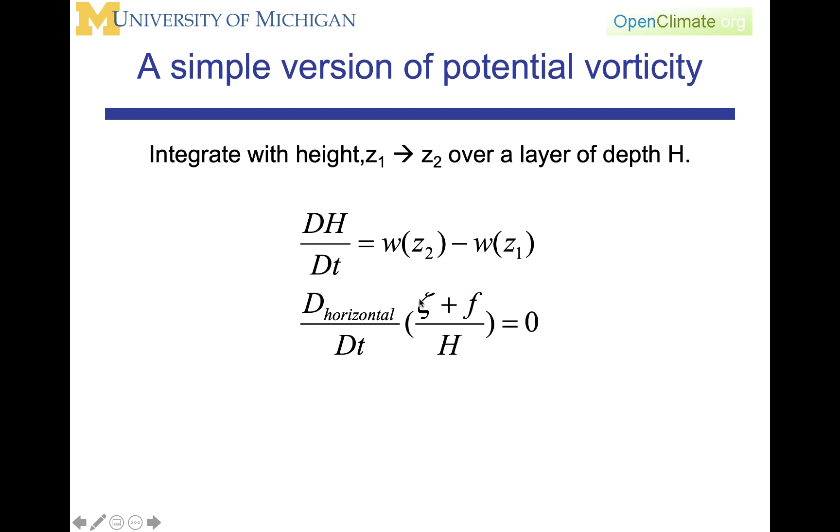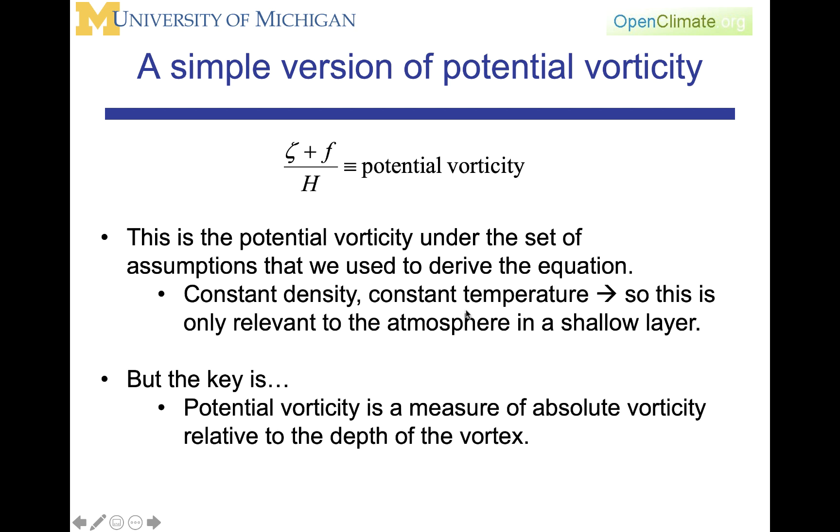This quantity here, the (zeta + f)/h, is the potential vorticity. This is the potential vorticity under a set of assumptions that we use to derive the equation, where we use constant density, constant temperature. So this is only relevant to an atmosphere in a shallow layer.